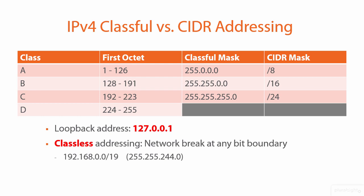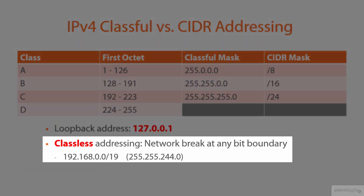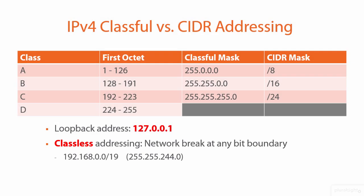When you do classless addressing, you give the network address — in this example 192.168.0.0/19. That tells us we're starting with what looks like a class B shape where the first 16 bits are the network ID. But instead of doing a slash 16 or 255.255.0.0 mask, if we do a slash 19 — meaning we use the first 19 bits for networks — that changes the subnet mask to 255.255.224.0. If you do the math, that gives you eight separate subnetworks, each supporting up to 8,190 hosts per subnet. The reason you might want to do this subnetting is for performance, organization, and security reasons.